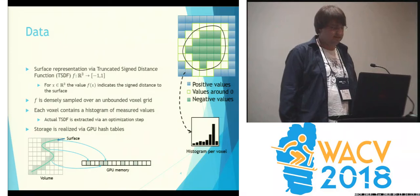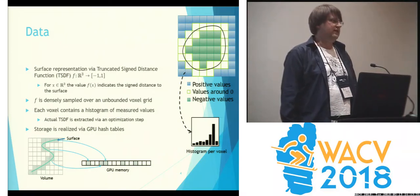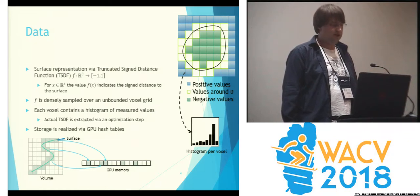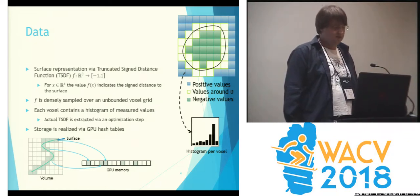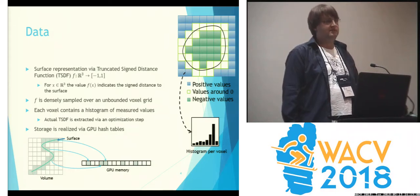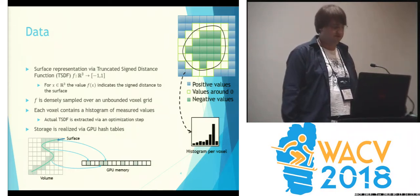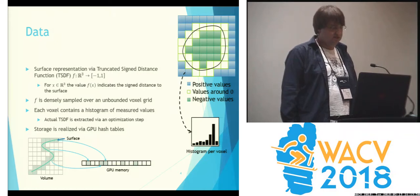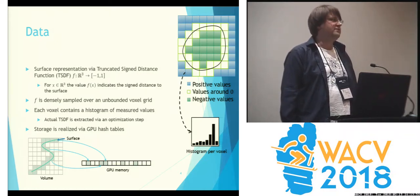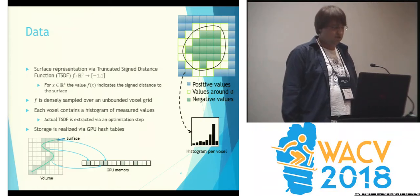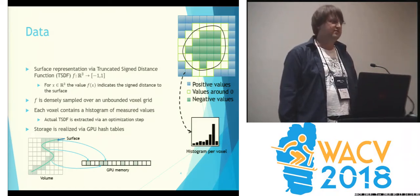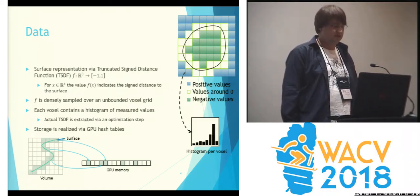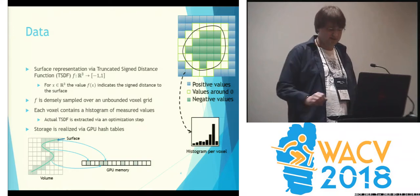Our data is represented as a truncated signed distance function. This function evaluates for 3D coordinates the distance to the geometry. The geometry we want to recreate is essentially the zero-level isosurface of this function. We sample it densely over an unbounded voxel grid, and each voxel contains not a single value but a complete histogram of all measured values. To get the actual TSDF, we have to transform these histograms into the actual TSDF, and this is done in our optimization step. If you want to know more about the optimization step, you can ask me at the poster session.